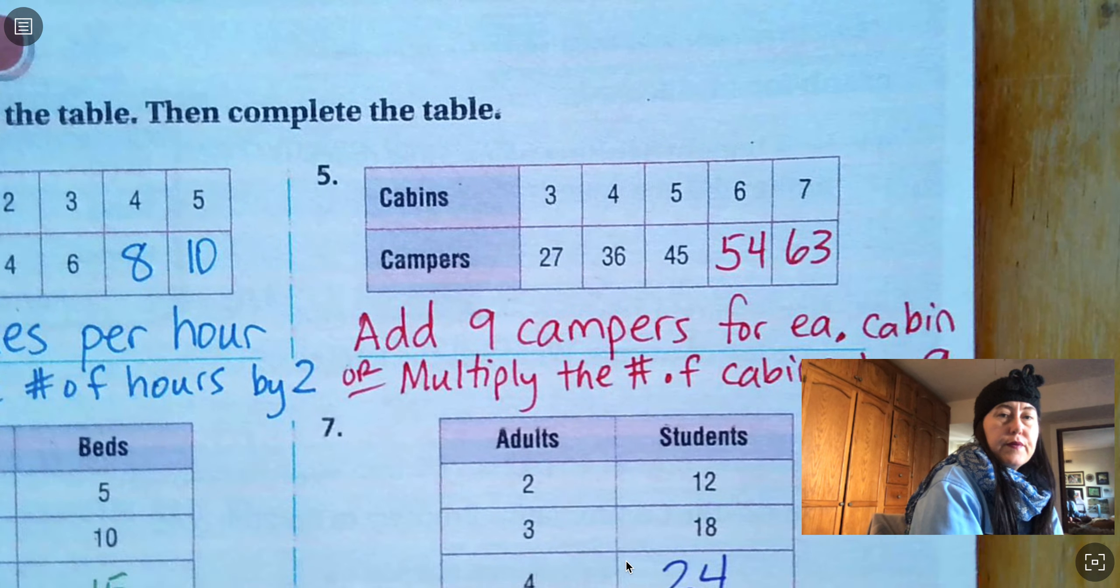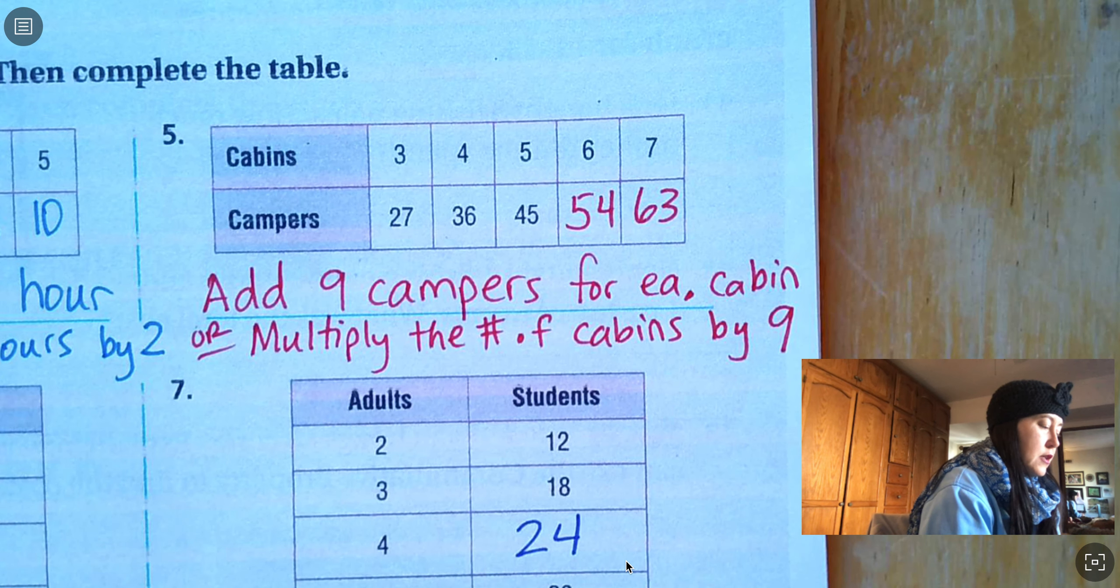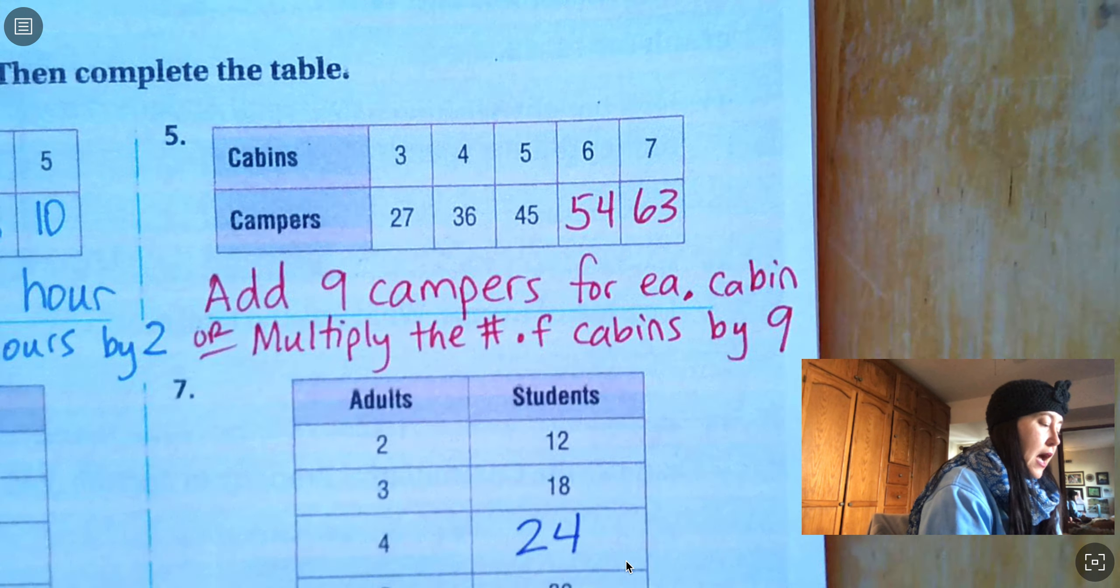Number five. I've got cabins and campers. So I can either add nine campers for each cabin, or I could multiply by nine. So seven times nine equals 63. Six times nine equals 54.